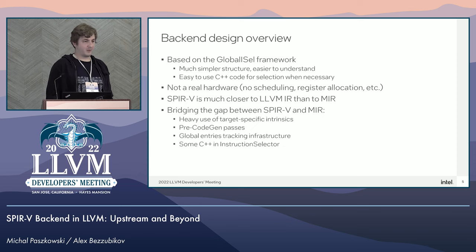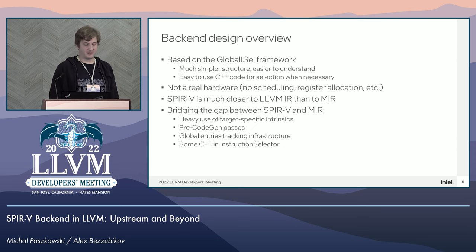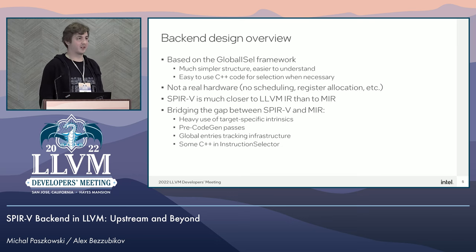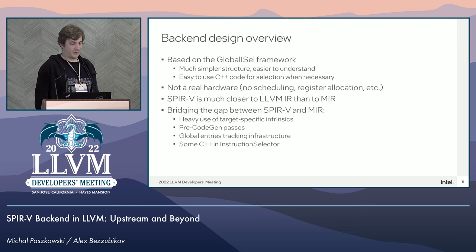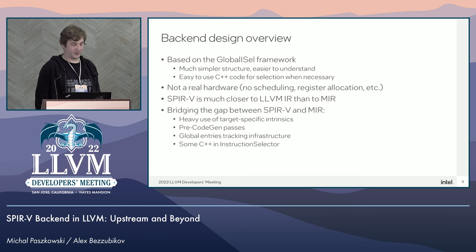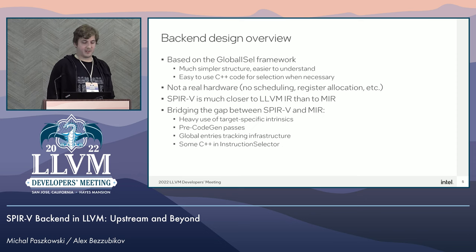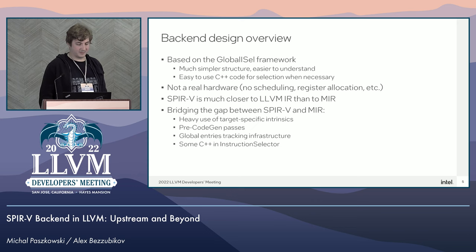First of all, we use target-specific intrinsics pretty heavily — I will further describe what we need them for. That's a difference from some ordinary hardware-oriented backends. We generate those intrinsics with some of our pre-codegen passes, which means these passes operate on LLVM IR rather than MIR. Also, we had to introduce some global interest tracking infrastructure, which I will also talk about in a couple of slides.